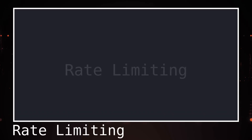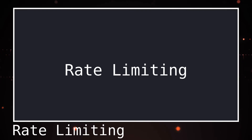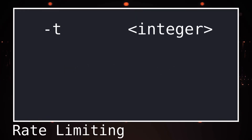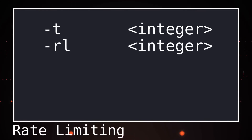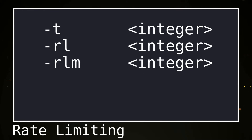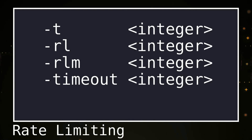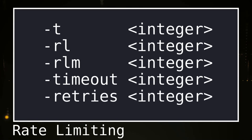When dealing with a large scope during an engagement, defenses could be triggered by the speed of requests across many hosts in quick succession. HTTPX offers ways to limit request rates: the -t flag limits the number of threads, with a default of 50 per second and a maximum of 150 per second; the -rl flag limits requests per second; the -rlm flag limits requests per minute. The timeout flag sets how long each request is allowed to take in seconds, and the retries flag sets the number of retries before HTTPX marks the target as unable to connect.